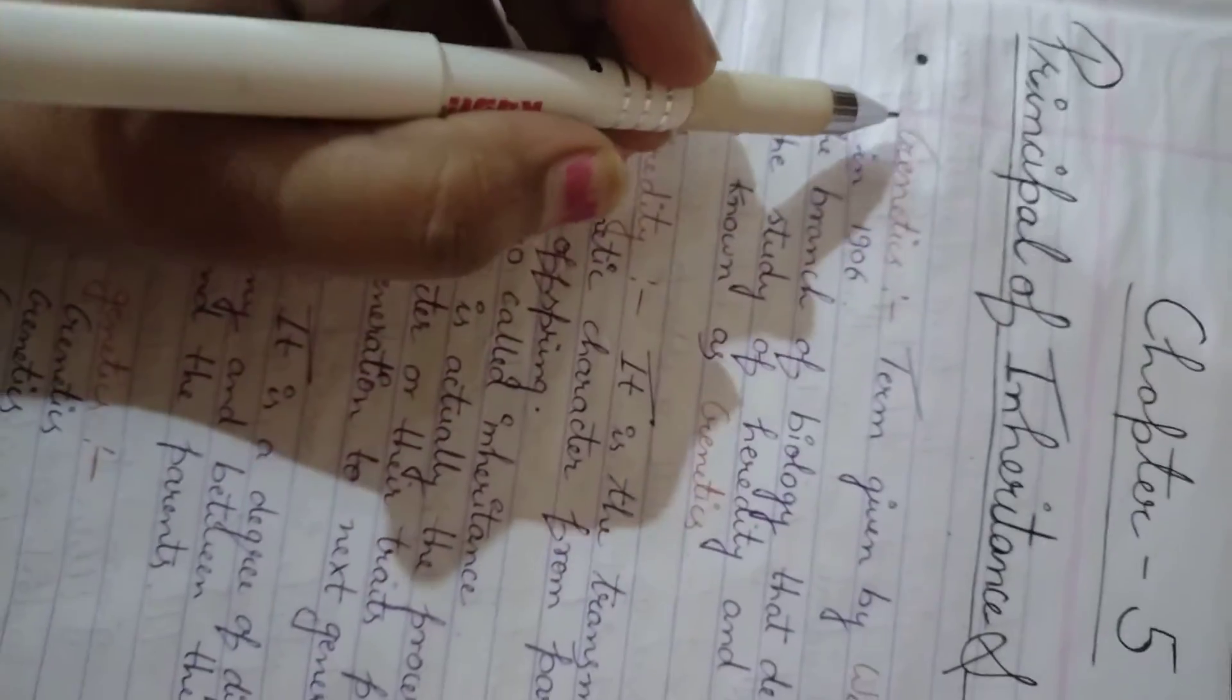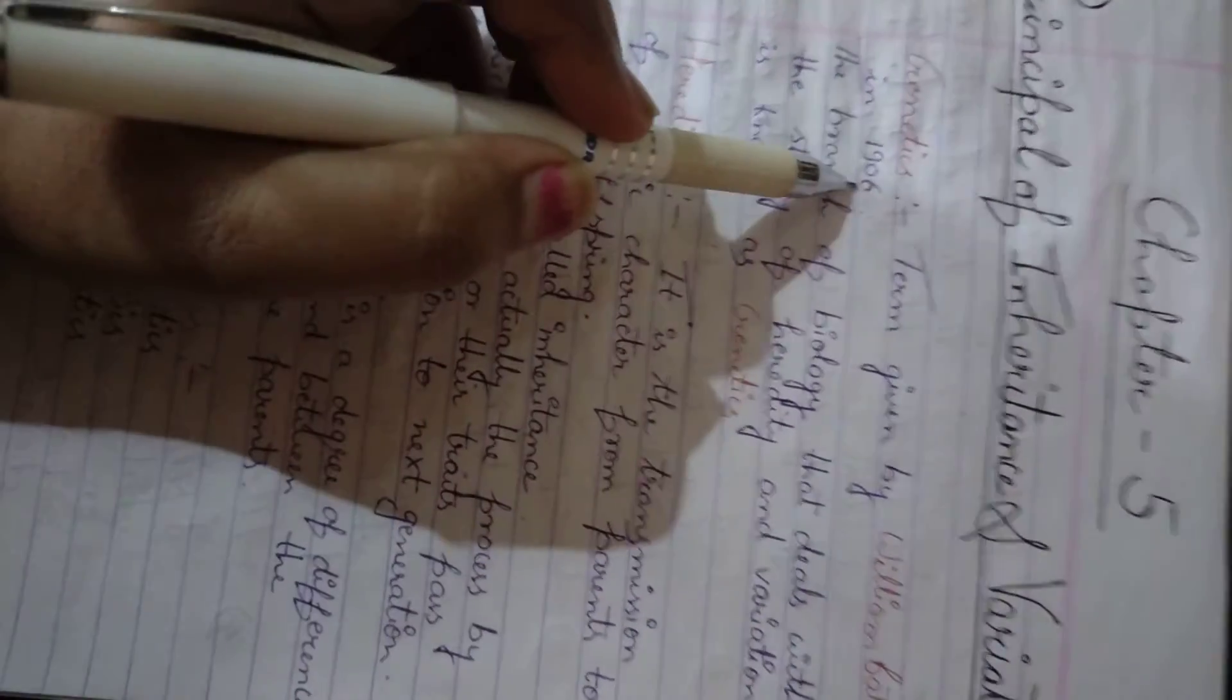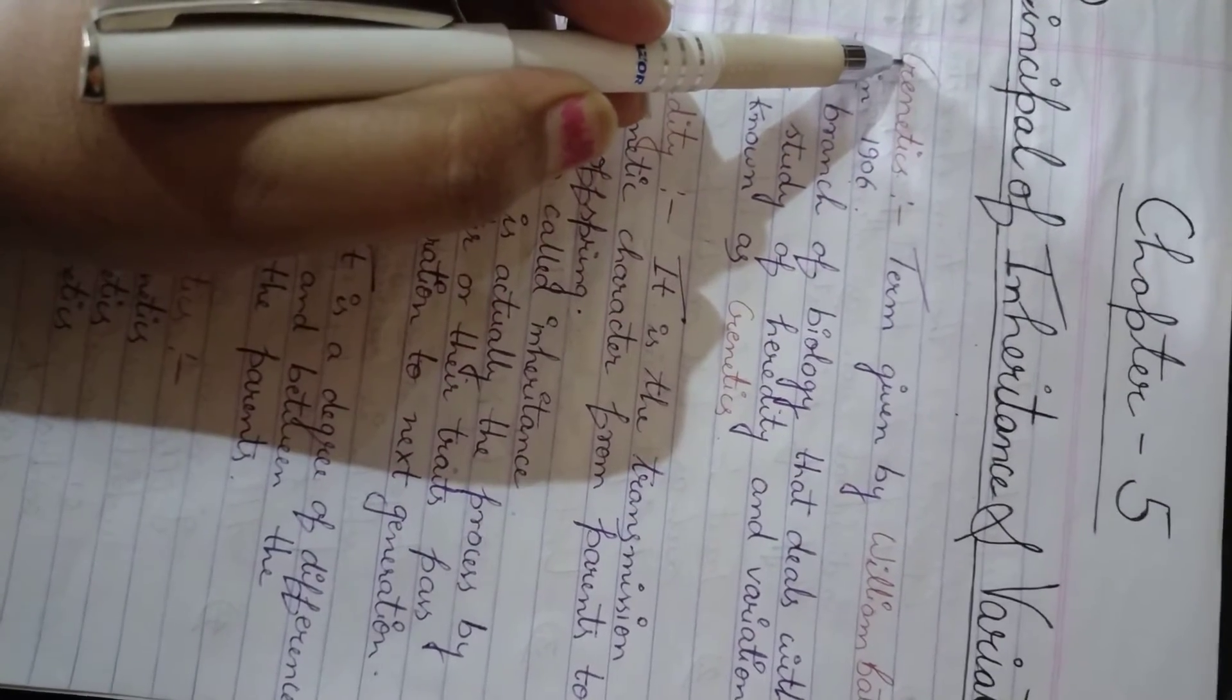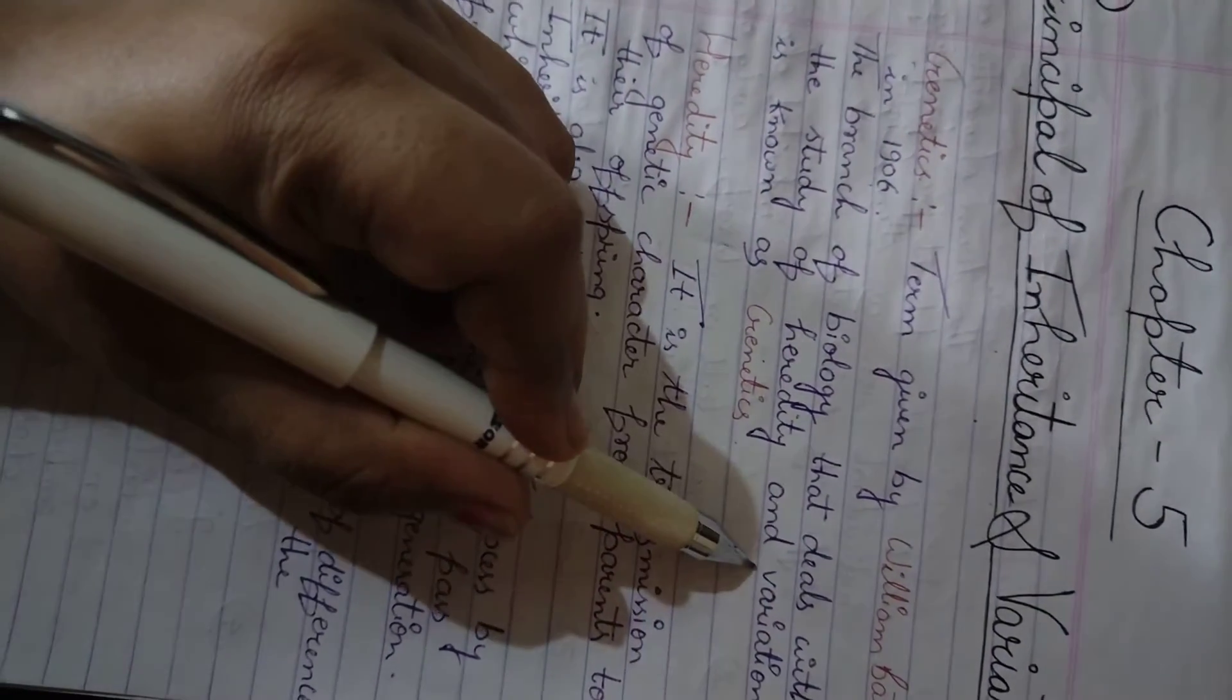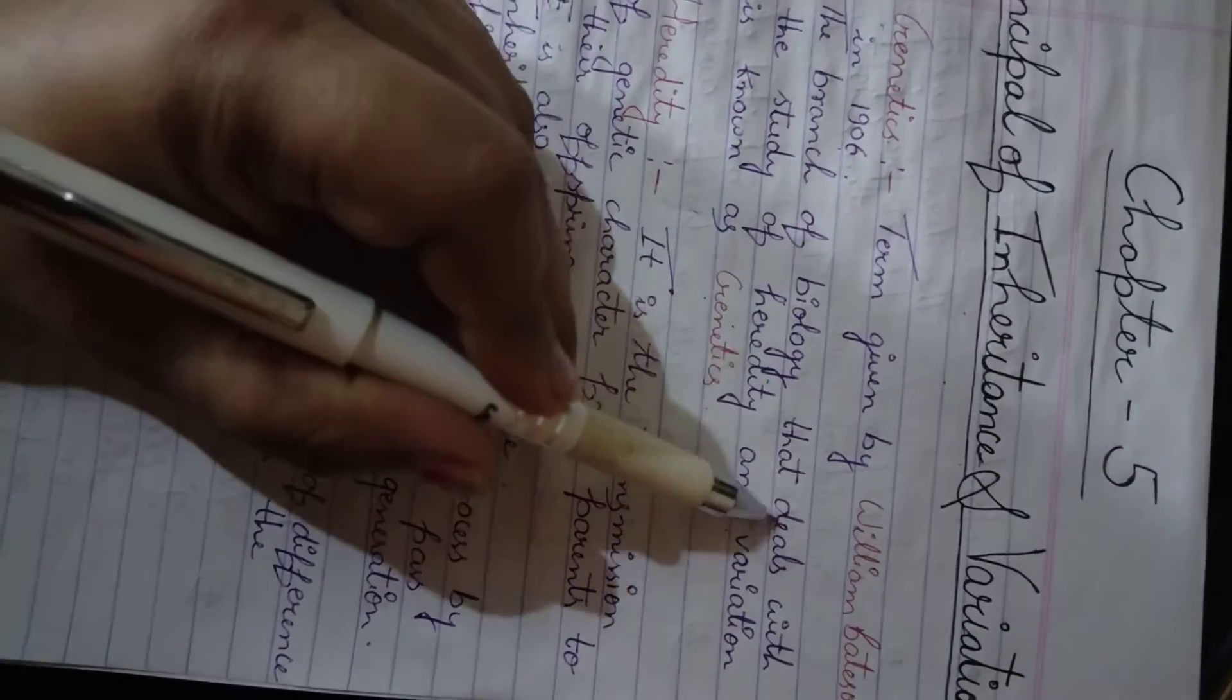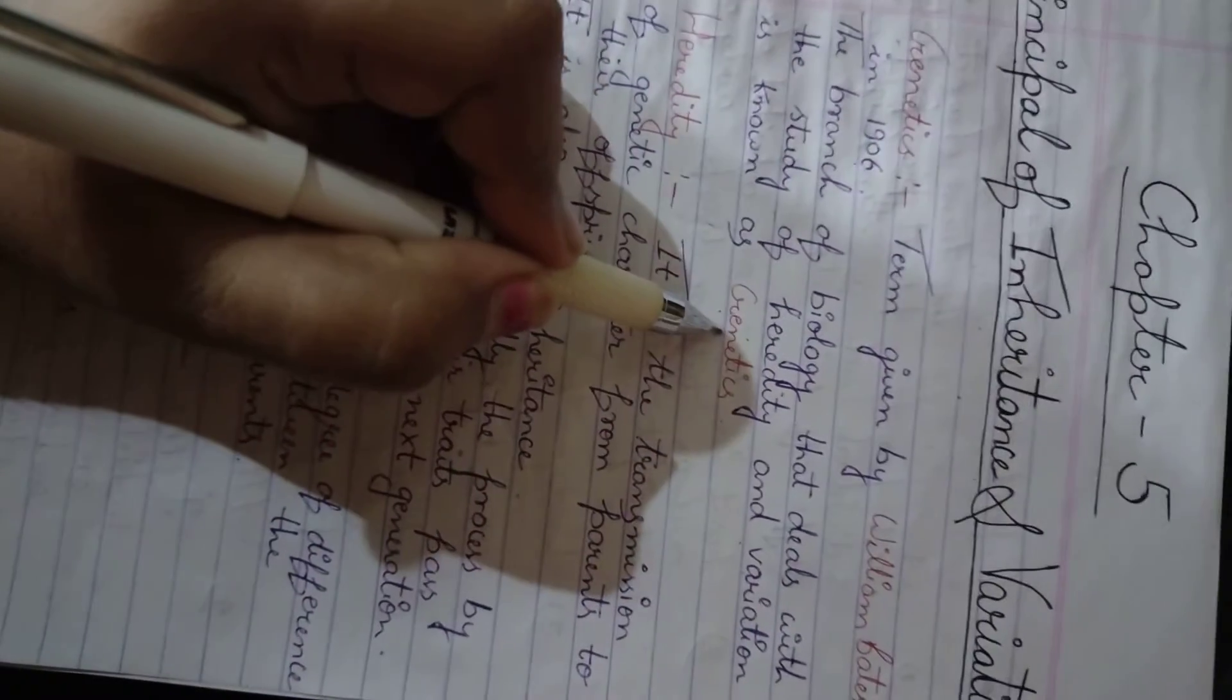So next, what we are going to study is genetics. What is genetics? The term was given by William Batson in 1906. So the word genetics was first coined by William Batson in 1906. So now we have to understand what is genetics. The branch of biology that deals with the study of heredity and variation is known as genetics.